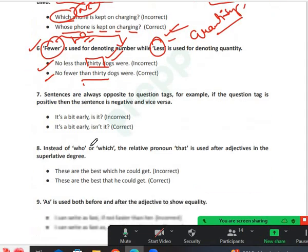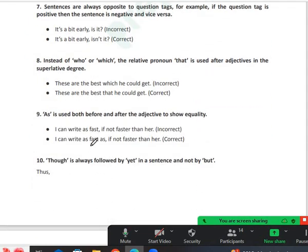Moving to the seventh point: sentences are always opposite to question tags. For example, if the question tag is positive then the sentence is negative and vice versa. It's a bit early, isn't it? Here 'isn't' is the negative tag, so 'it is' must be positive. Is it clear? Yes sir.